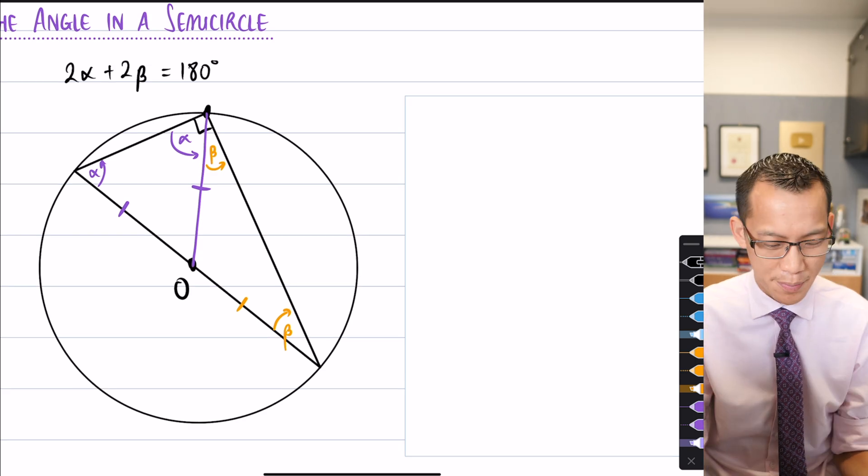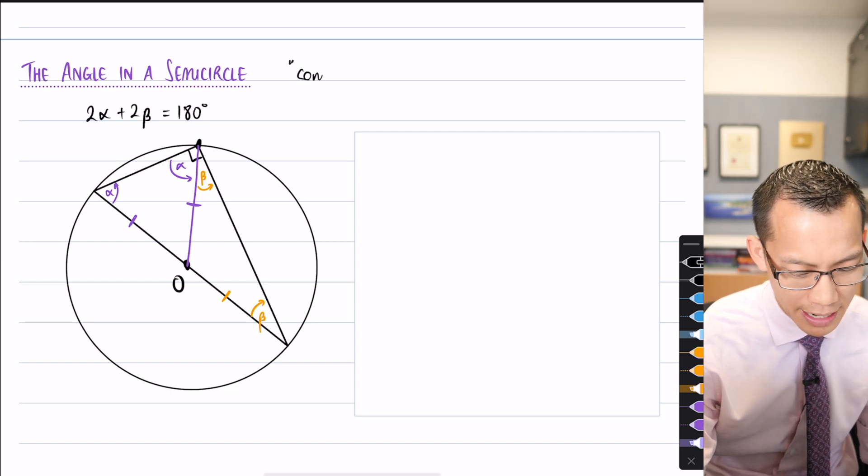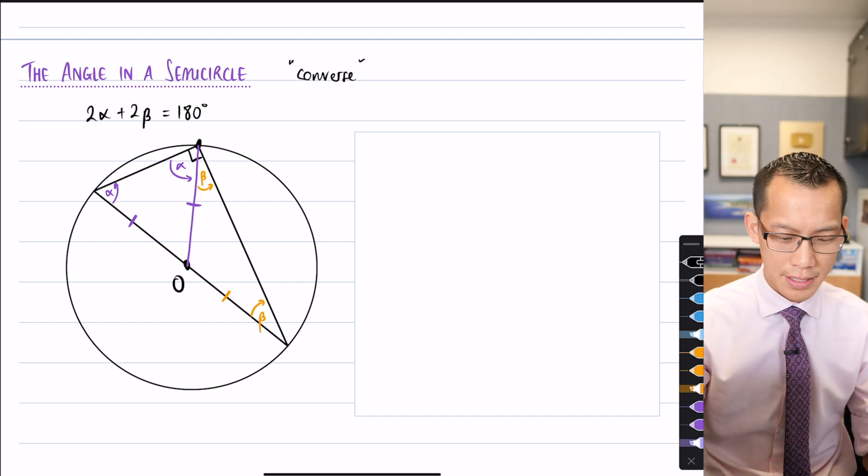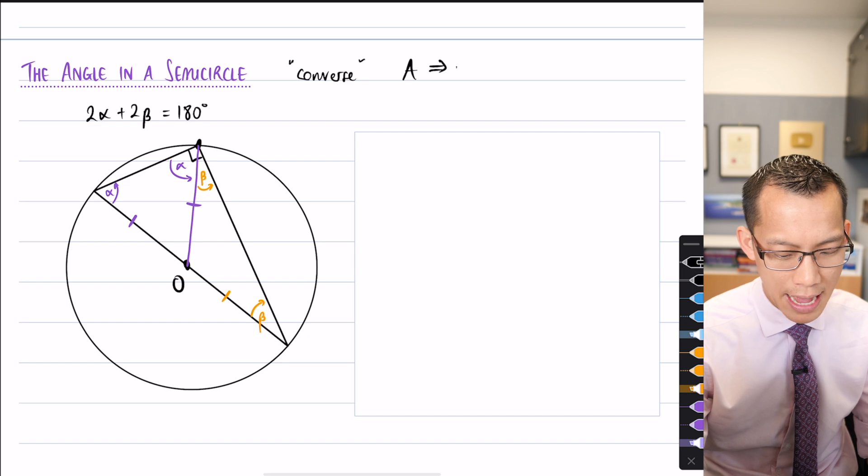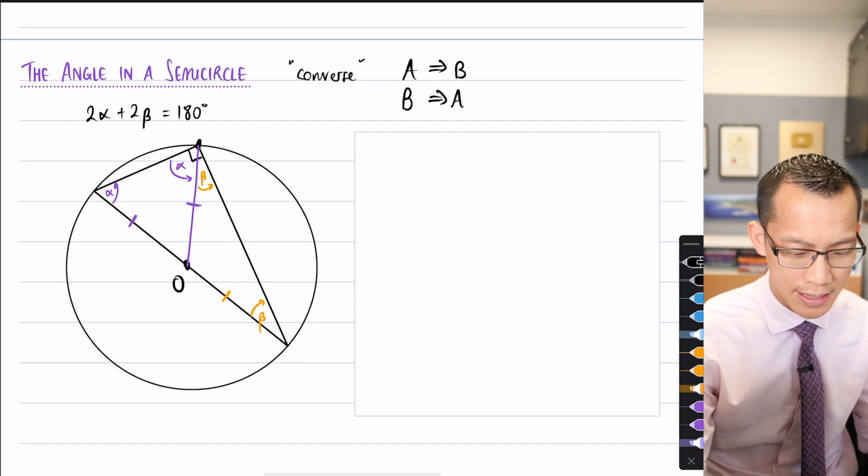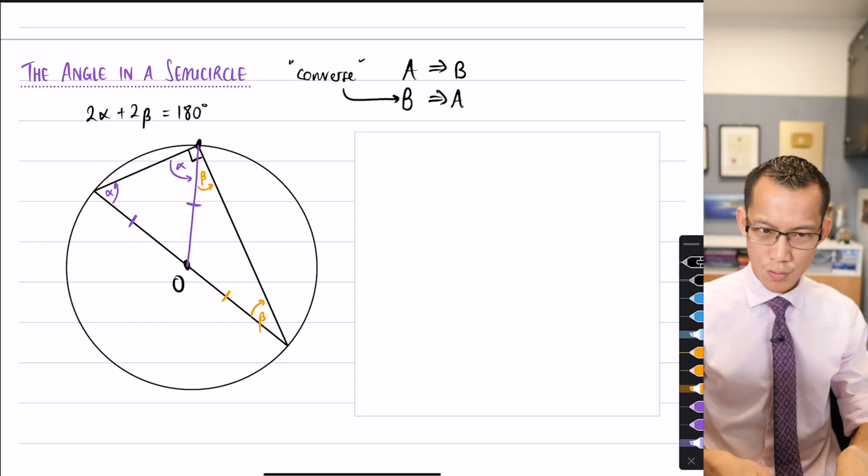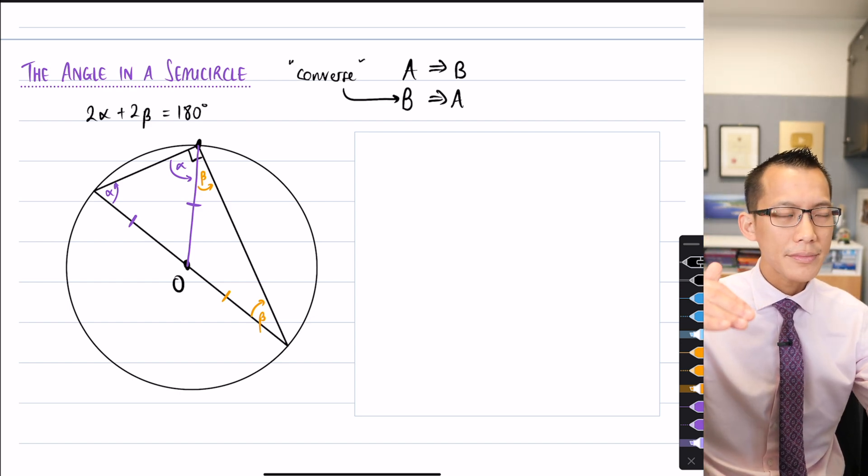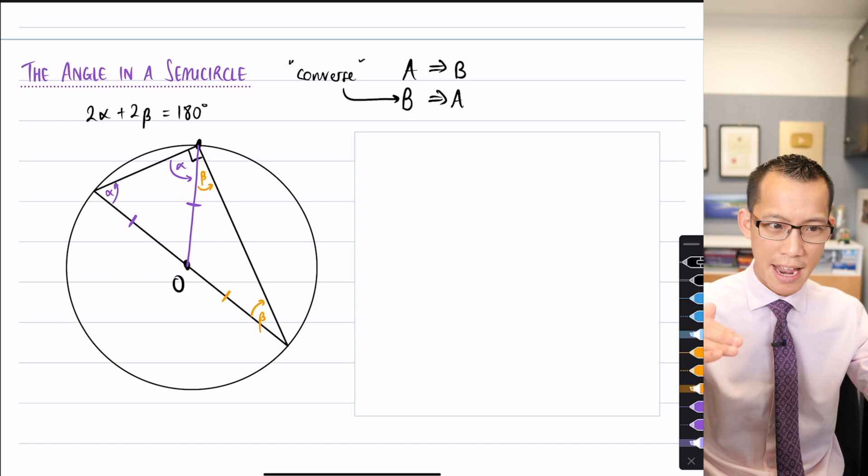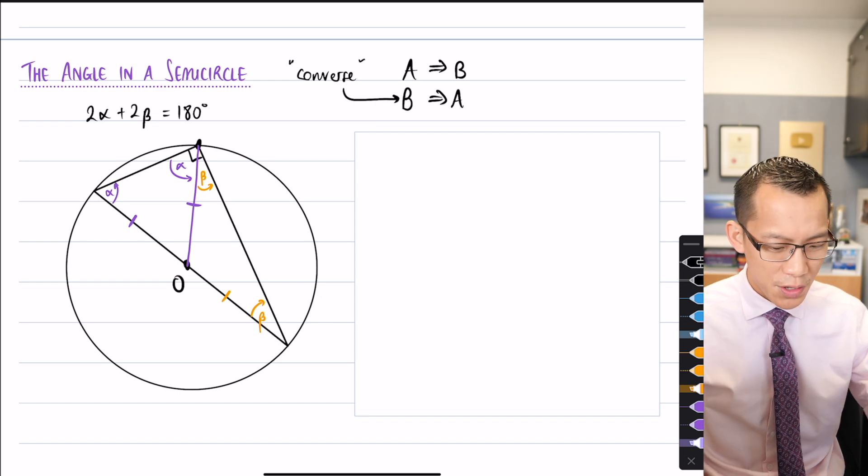Now, this obviously is not a vector proof. But we're going to use vectors to prove what's called the converse. Have you done nature of proof? Yeah, we've done it. So, if you remember, a converse is, if you know that A implies B, the converse is the other way around. So, B implies A. This thing here is the converse. So, what I'm saying is, we just proved that if you've got a diameter, then you have to get a right angle. So, the converse with that would be, if you've got a right angle, you must have the diameter. So, we're going to prove this.